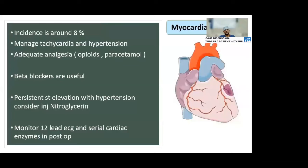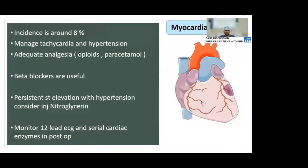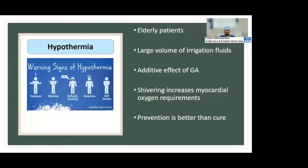Myocardial ischemia: incidence is around 8%. Manage tachycardia and hypertension appropriately. In hypotension, consider vasopressors and inotropes. Maintain adequate analgesia and temperature. For analgesia, consider opiates and ketamine. Perioperative beta blockers are definitely useful. For persistent ST elevation with hypertension, consider intravenous nitroglycerin. Monitor with 12-lead ECG, serial cardiac enzymes, 2D echocardiography, and preferably shift the patient to a cardiac care area postoperatively.